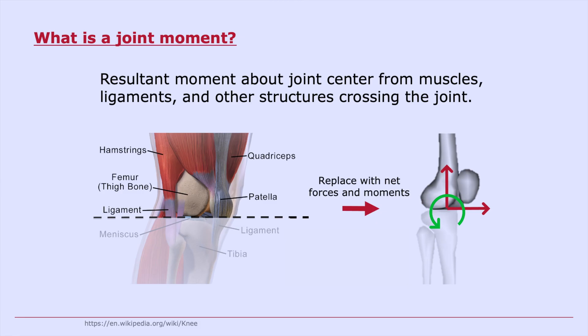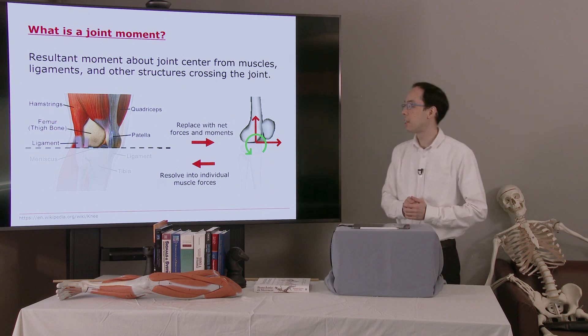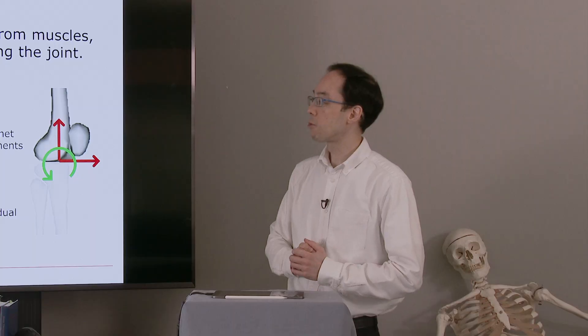So what is a joint moment? We saw this picture before in chapter 8. We looked at going from all the forces in the biological system to the equivalent system of net forces and moments. Now we're going to go in the opposite direction. Suppose we have the net forces and moments from chapter 8. We want to resolve them into individual muscle forces to understand more about how movement was generated.